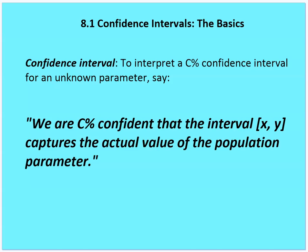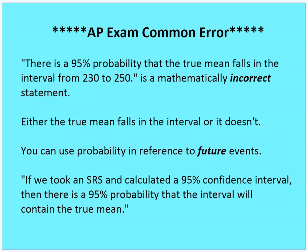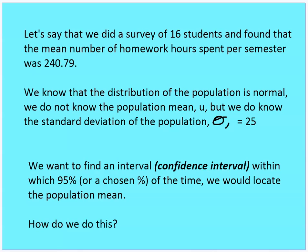To interpret a confidence interval for an unknown parameter, we say: we are C% confident that the interval between x and y captures the actual value of the population parameter. This is the correct phrasing. Let's go through an example to make this more concrete — I'll start with theory and then move to an example.